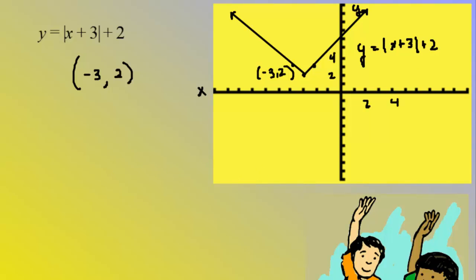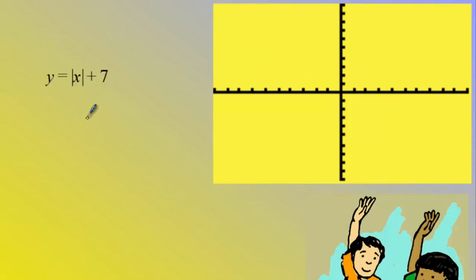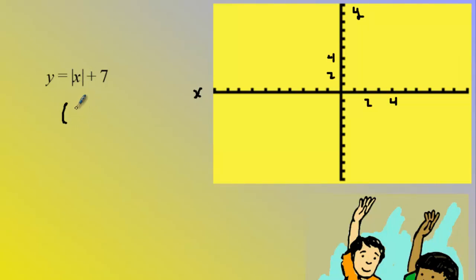One more example: y equals the absolute value of x plus seven. There is no reflection over x and no vertical stretch or shrink. All I need to do is locate the vertex. There is no movement left or right so it stays at the origin horizontally, and there's a translation up seven, so my vertex is at zero, seven.